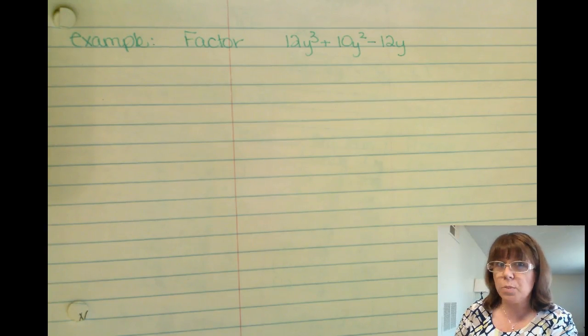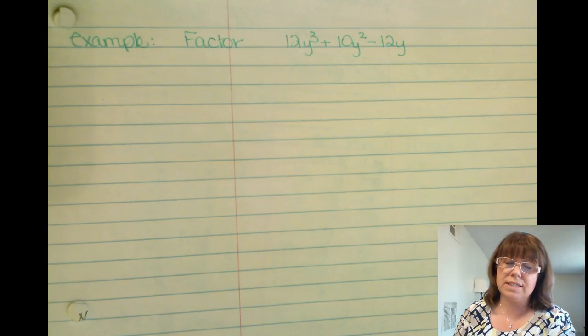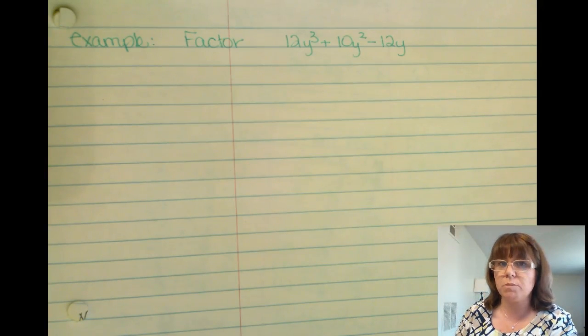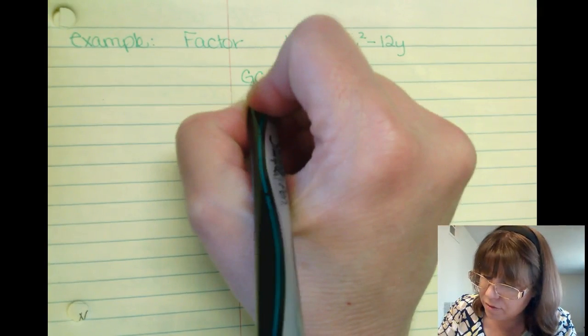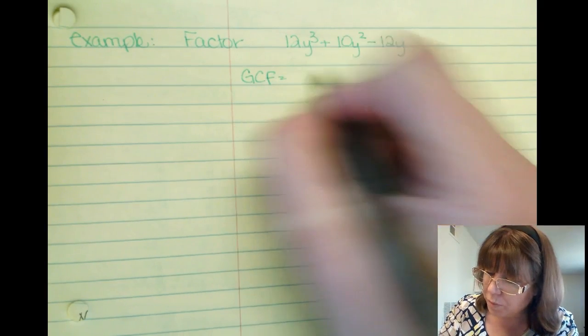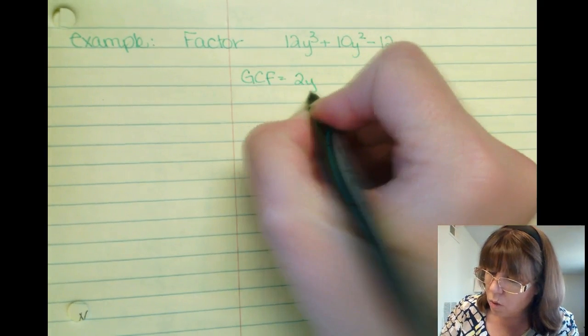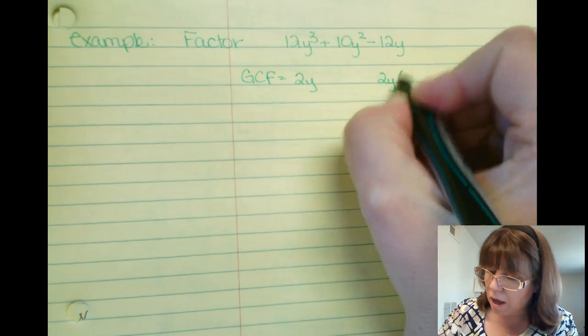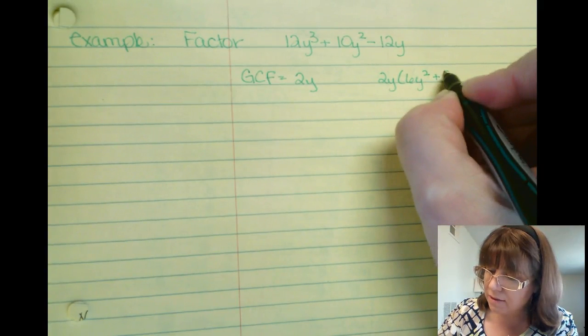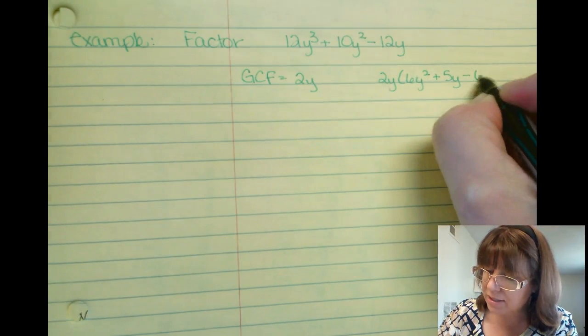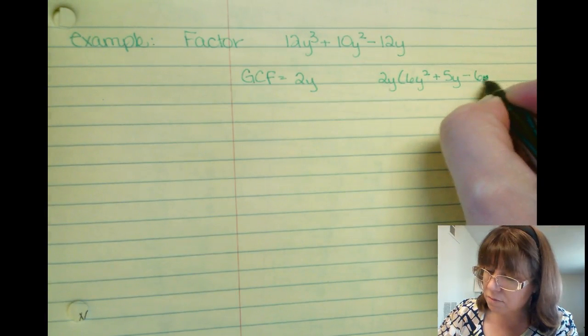When I first look at a problem to factor, I do look to see if is there a GCF to make this problem a little less complex. For 12xy cubed plus 10xy squared minus 12y, there is a GCF, and the GCF will be 2y. If I factor out a 2y, that will leave me 6y squared plus 5y minus 6.